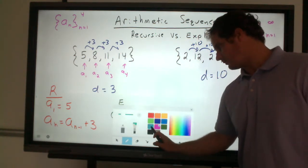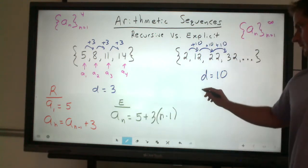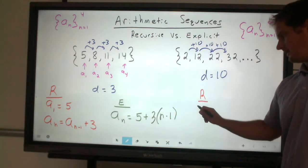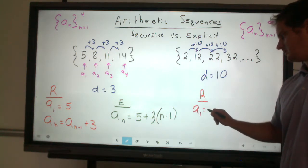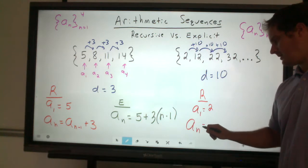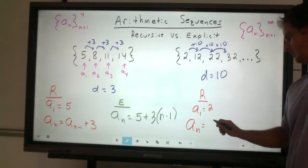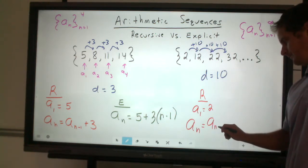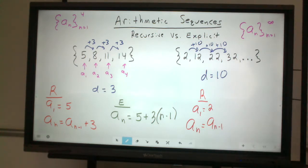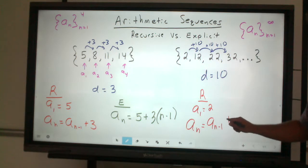To write a recursive rule for this, you want to establish what that first term is. And that first term happens to be 2. And to find any term or any nth term in the sequence, we look at the previous term, or a sub n minus 1, plus what the common difference is, which happens to be 10.